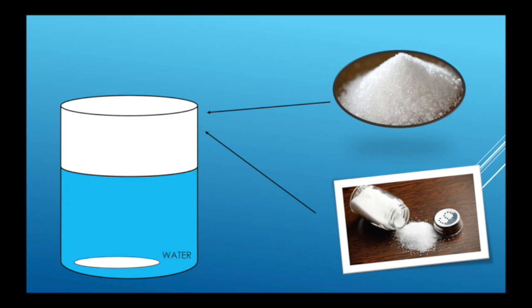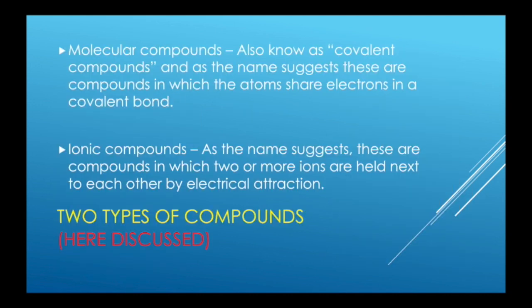So why choose sugar versus salt? Well, that's because there are two types of compounds that I want to discuss here: molecular and ionic. So molecular compounds, also known as covalent compounds, and as the name suggests, these are compounds in which the atoms share electrons in a covalent bond. Ionic compounds, as the name suggests, these are compounds in which two or more ions are held next to each other by electrical attraction.